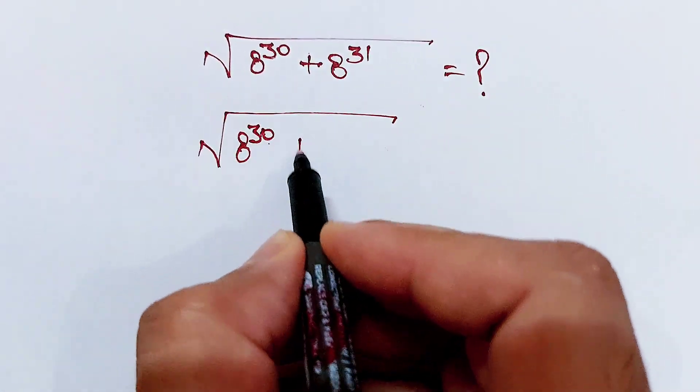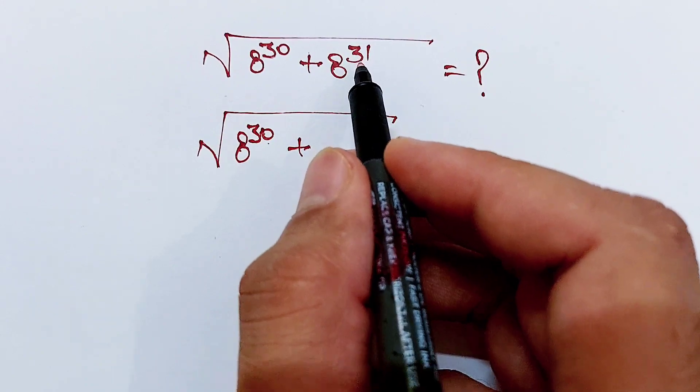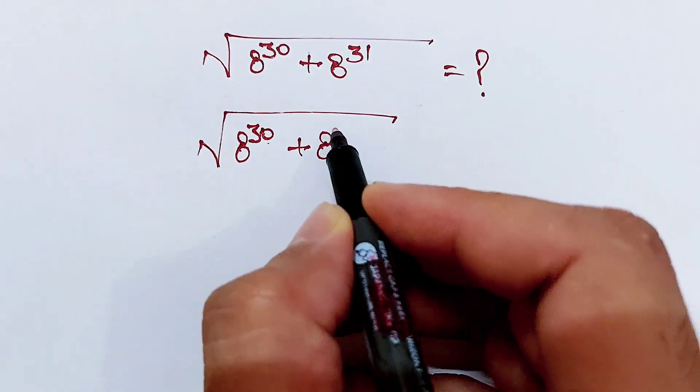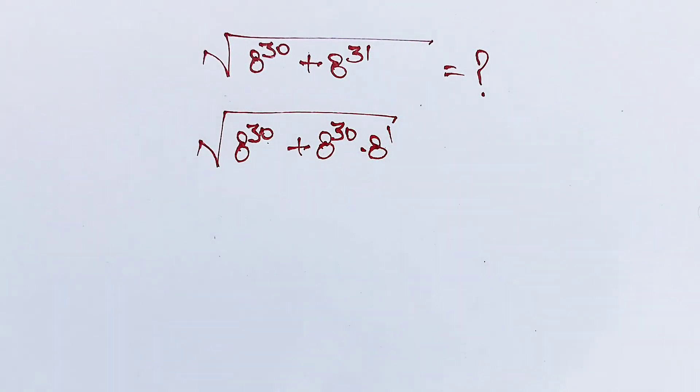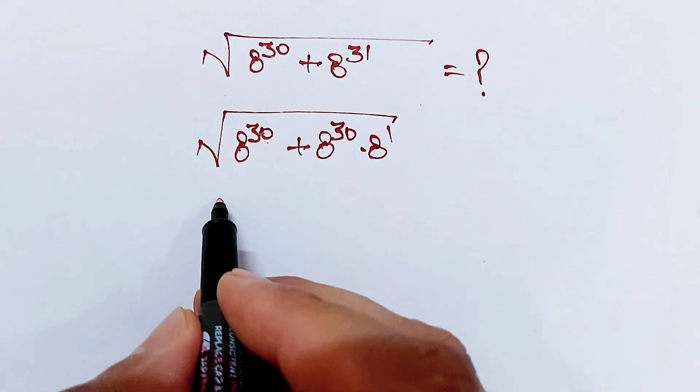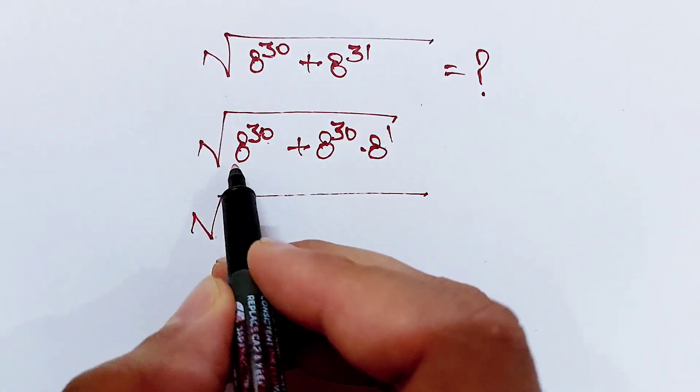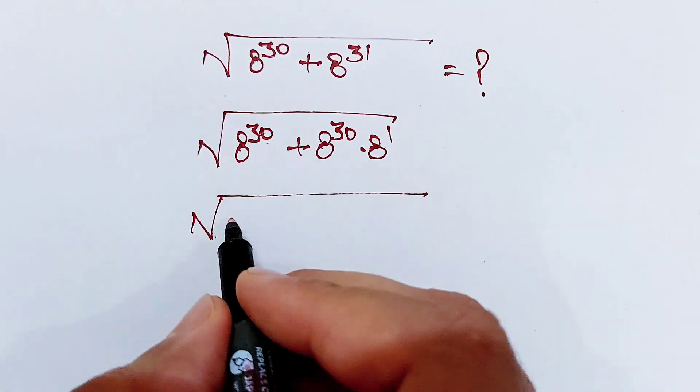plus 8^31, which is the same as 8^30 times 8^1. Now here we can take 8^30 as a common term.